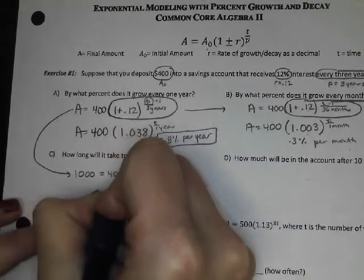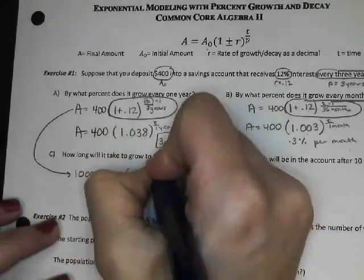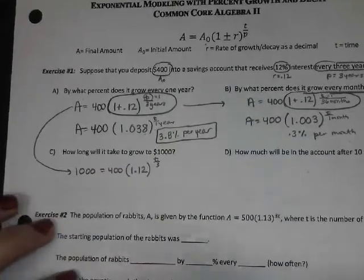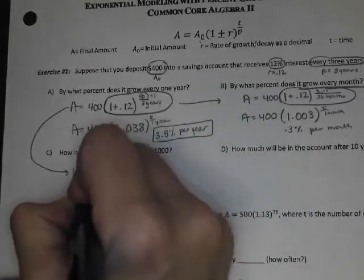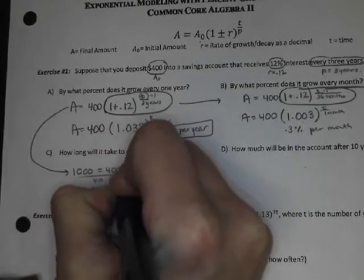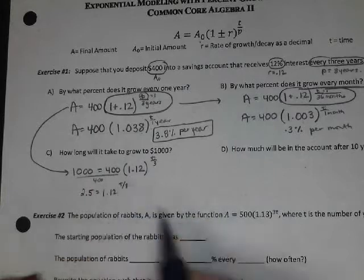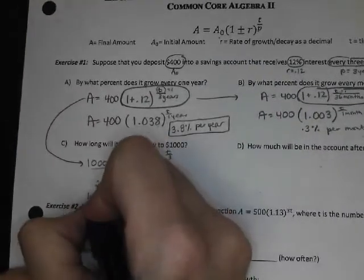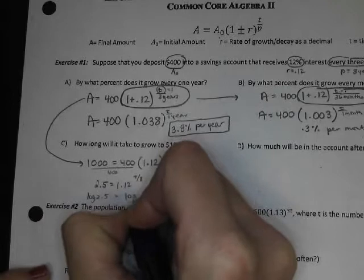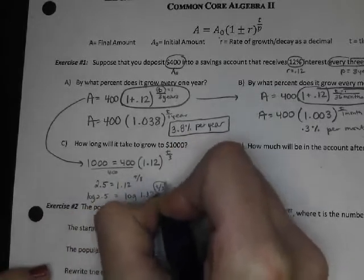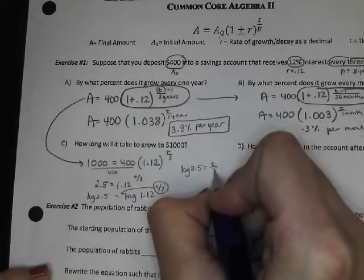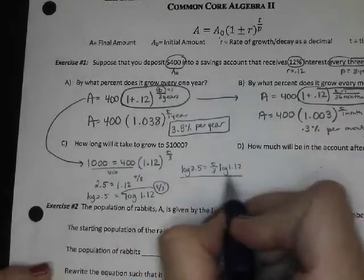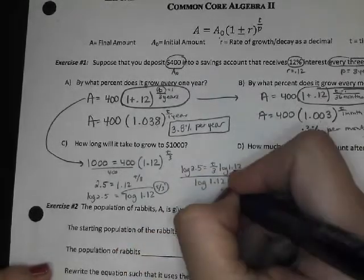So, there's my 1,000. We put 400, 1.12 to the T over 3. And we're just solving this like we have in the past. So we divide 400 on both sides. 1,000 divided by 400 is 2.5. To get the exponent out of there, we're going to log both sides. Which allows us to bring that exponent out in front. So it's the log of 2.5 equals T over 3 times the log of 1.12.